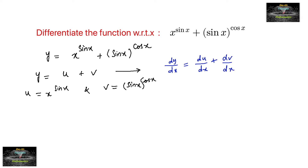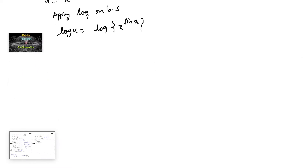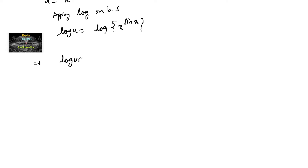First, we take u = x to the power of sin x. Let us find the differentiation by applying logarithm — logarithmic differentiation. Apply log on both sides. So we have log u = log of x to the power of sin x, which implies log u = sin x into log x.